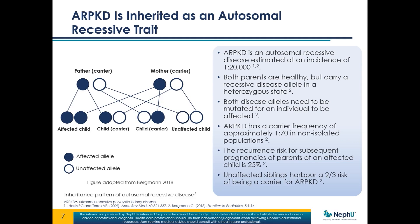The carrier state is actually pretty common, about one in 70. If you have one child in your family with ARPKD, the risk of having a second one is twenty-five percent. And the unaffected siblings harbor a two-thirds risk of being a carrier for ARPKD. That's the genetics in a nutshell.